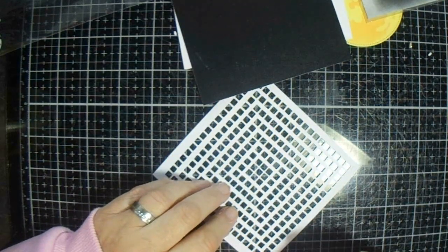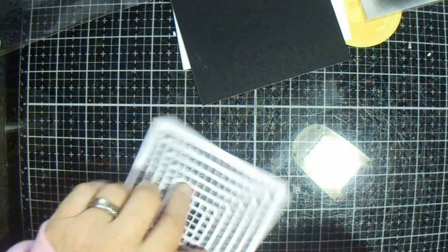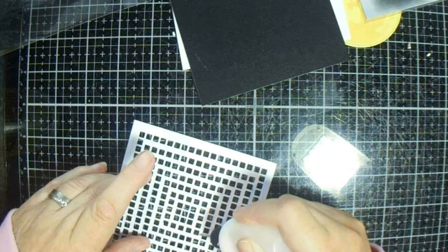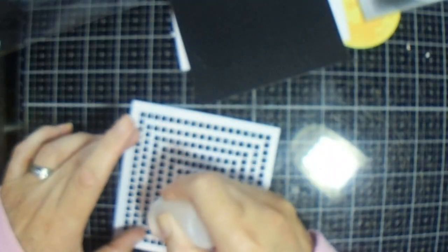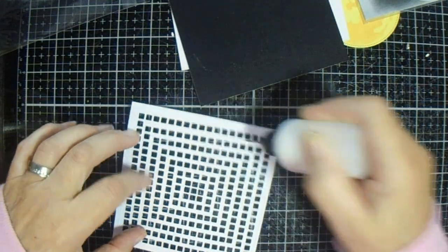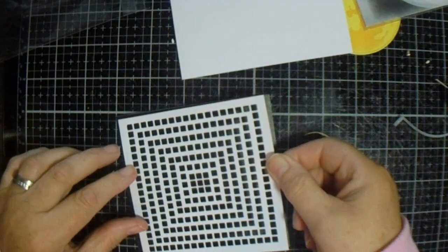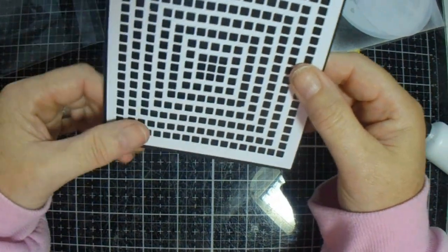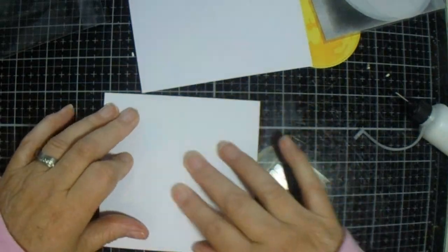And that black card is Crafter's Companion shimmer pearl, I'm pretty sure. Let's see how well this sticks to it. Just put glue on, or A40, wherever you can get it. And line it up. That's that bit done.